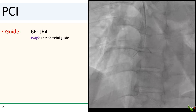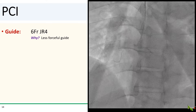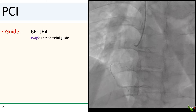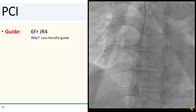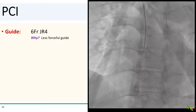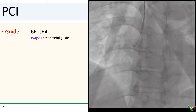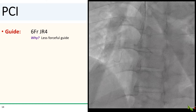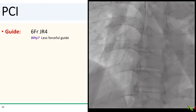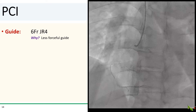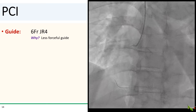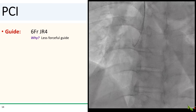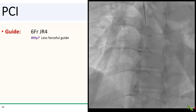PCI for SCAD — and for any dissection — is very different from regular PCI, and it can turn south very quickly, so I had to do this very carefully. I chose a JR4 guide. The JR4 is my standard STEMI guide for RCAs, and it's well suited here because the engagement is usually not deep and is less likely to cause further damage to the vessel wall. You don't want to choose an AL guide or a guide that will deeply intubate the vessel.